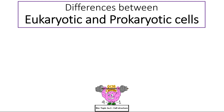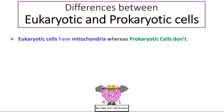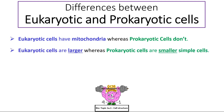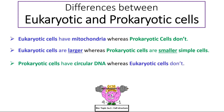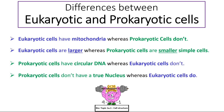Give four differences between eukaryotic and prokaryotic cells. Eukaryotic cells have mitochondria, whereas prokaryotic cells don't. Eukaryotic cells are larger, whereas prokaryotic cells are smaller, simpler cells. Prokaryotic cells have circular DNA, whereas eukaryotic cells don't. Prokaryotic cells don't have a true nucleus, whereas eukaryotic cells do.